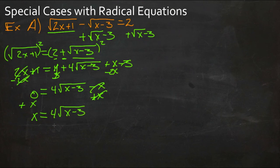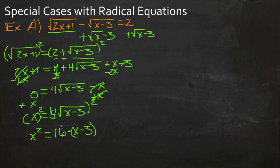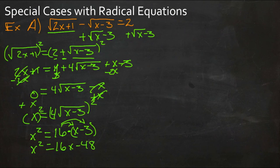Now we can square again to get rid of the second radical. On the left we get x squared, and on the right we get 4 squared, which is 16, times the square root of x minus 3 squared, which is just x minus 3. Distributing the 16 gives us x squared equals 16x minus 48.